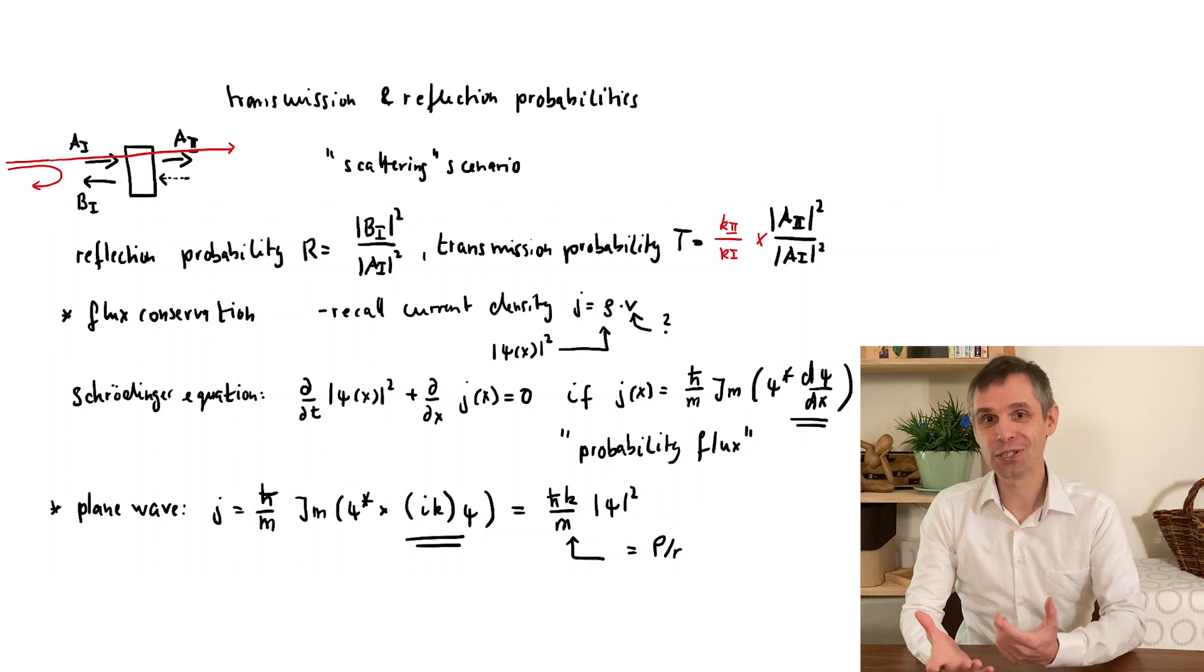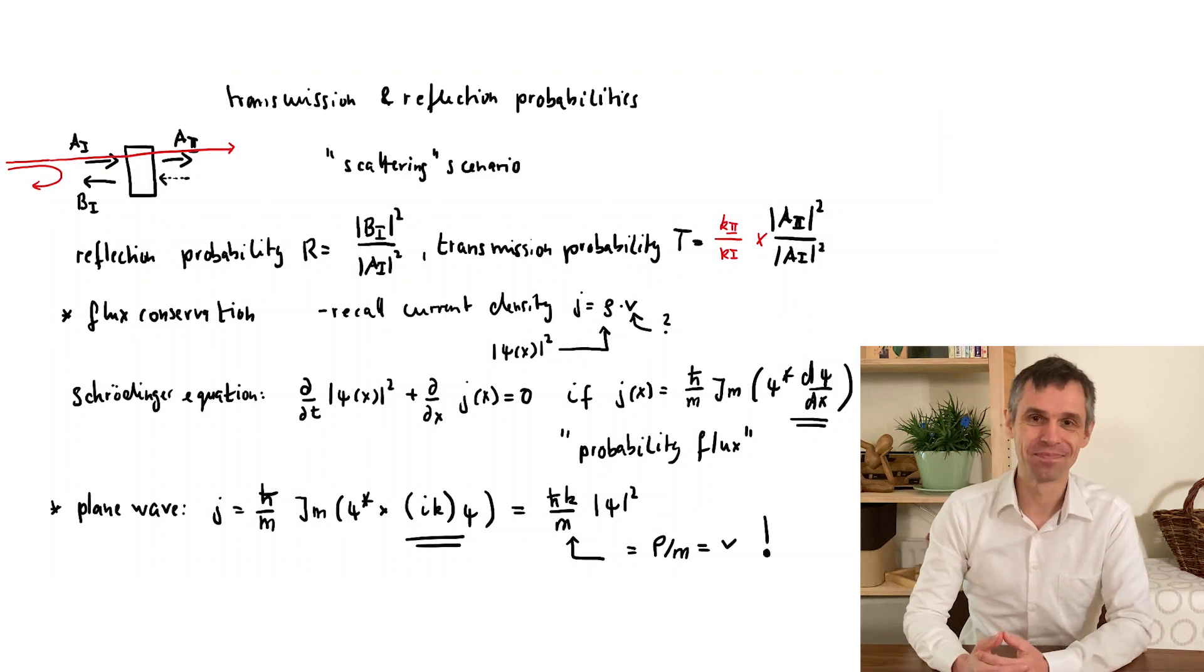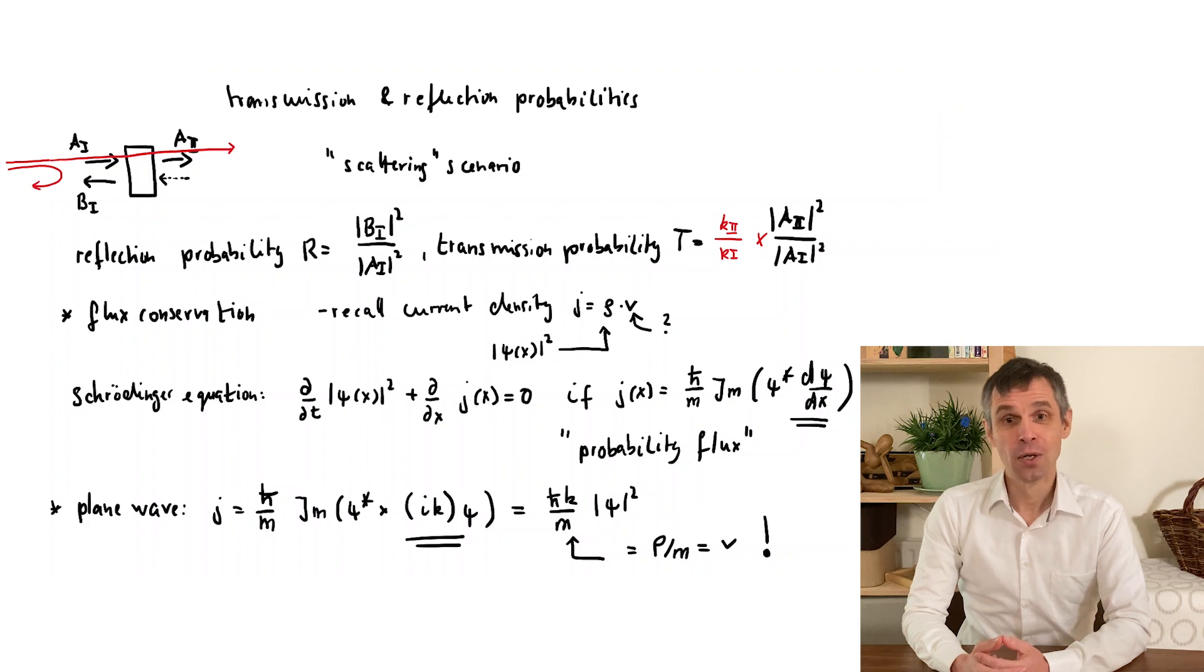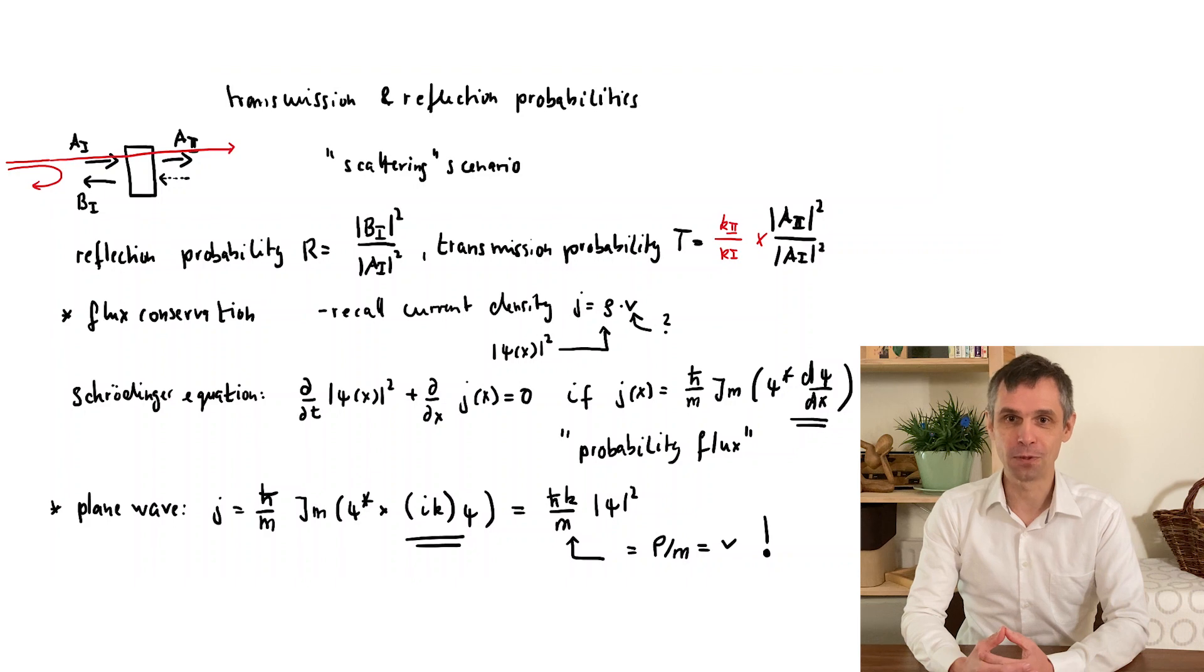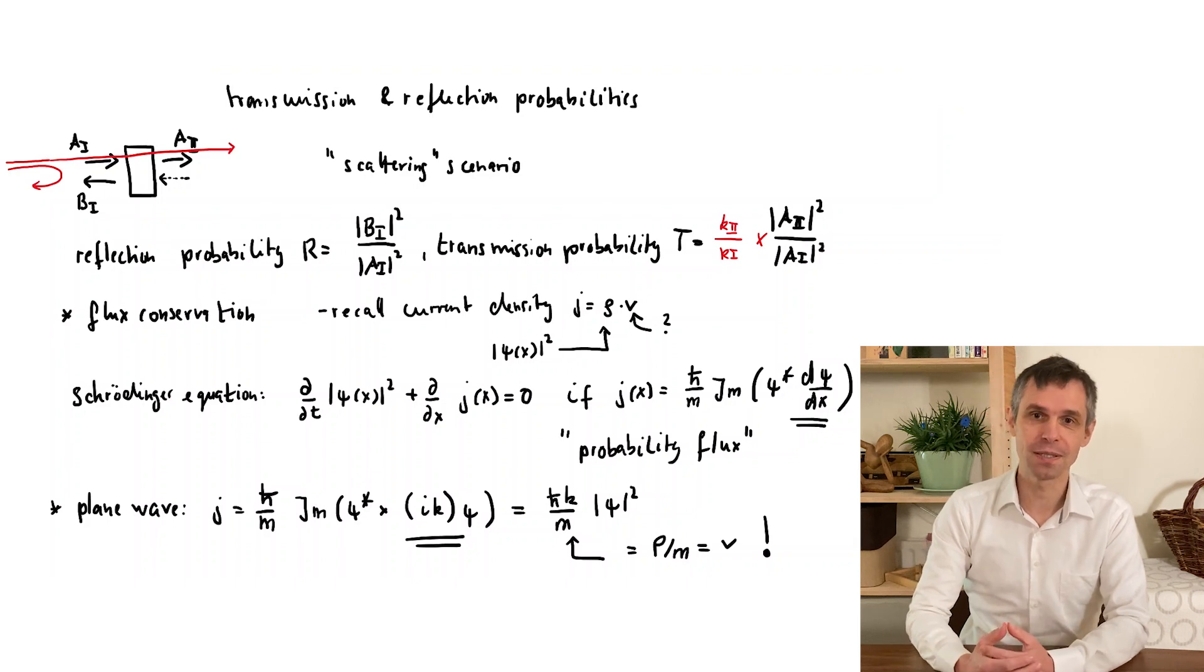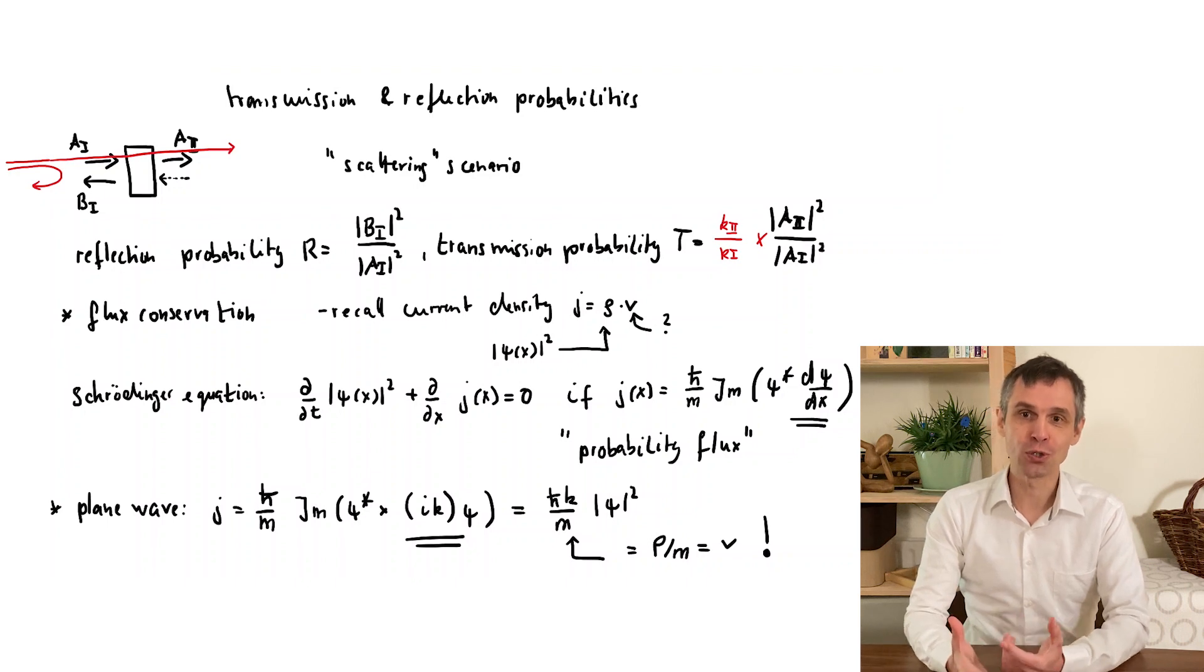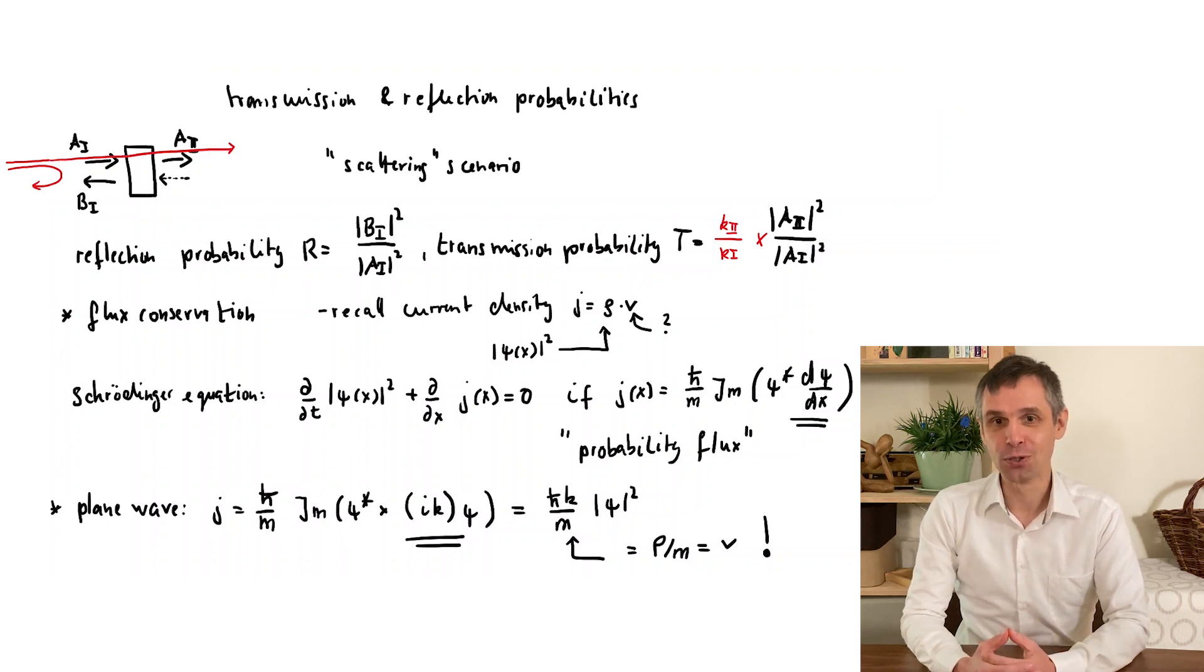So now in our scattering scenarios, the probability current is simply the intensity of this plane wave component, multiplied by this velocity. And if we want to work out the reflection and transmission probabilities, we really want to look at the ratios of these quantities, and not just the intensities themselves.